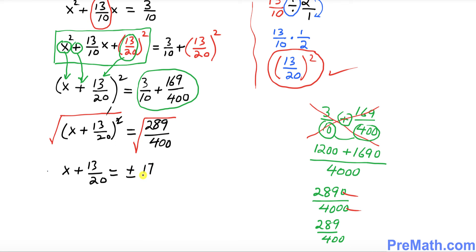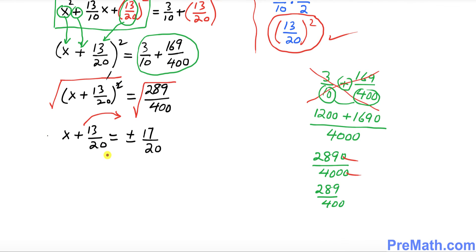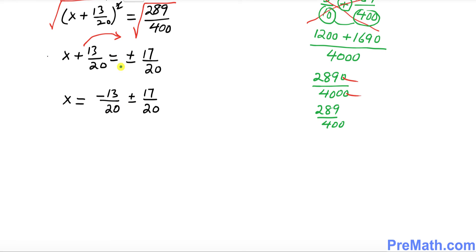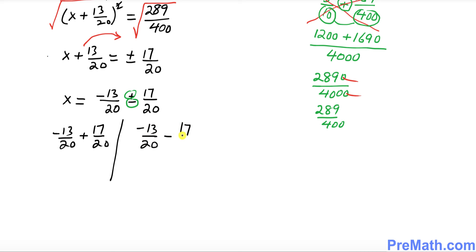The square root of 289 is 17 and the square root of 400 is 20. Now move 13/20 to the other side to isolate x: x = −13/20 ± 17/20. Splitting along the positive and negative signs: x = −13/20 + 17/20, and x = −13/20 − 17/20.